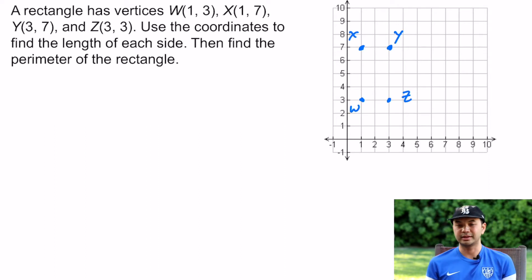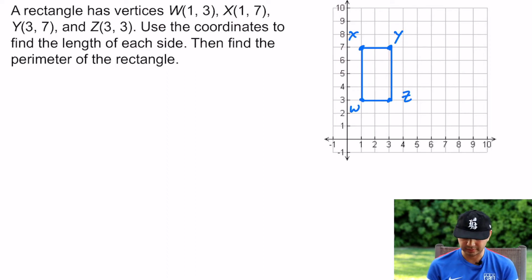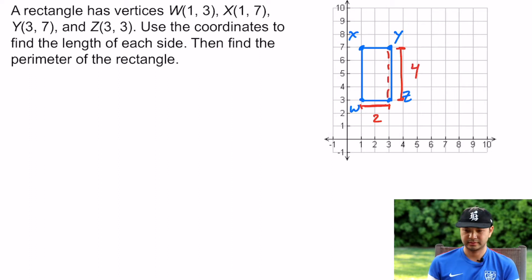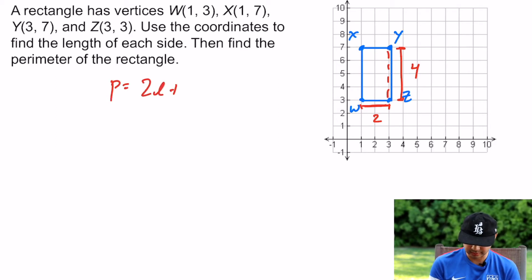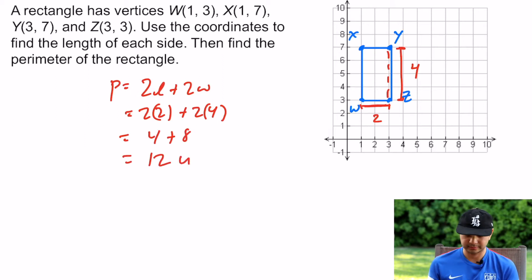Connecting these points, it's pretty straightforward to find how long each side is. From W to Z that's 2 units, and from Y to Z that's 4 units. It's only asking for the perimeter, so perimeter equals 2 times length plus 2 times width: 2(2) + 2(4) = 12 units.